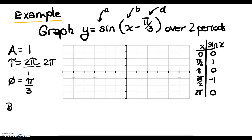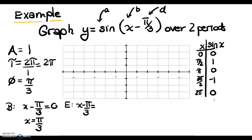To find the beginning of our period, we set x minus pi over 3 equal to 0 and solve for x, giving x equals pi over 3. To find the end, we set x minus pi over 3 equal to 2 pi and solve, giving x equals 7 pi over 3. If I label tick marks as pi over 3 apart, I won't have enough to reach 7 pi over 3 — that's 2, 3, 4, 5, 6 marks and I'm off the graph paper.